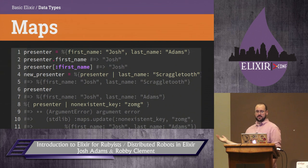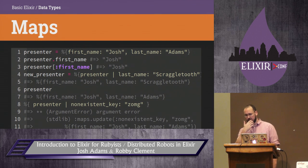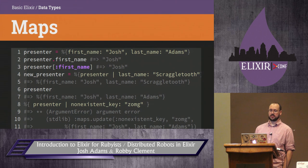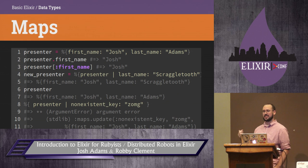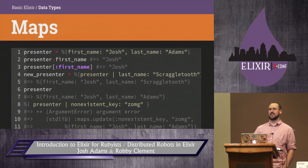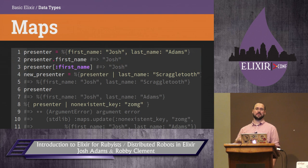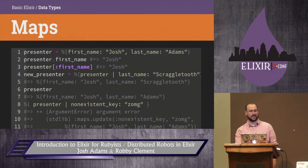Maps are like hashes for the most part. They're very new in Erlang — they landed in R17. As of this writing, they are actually still slow for large numbers of keys. At Erlang Factory they said that was going to be fixed in 17.1, but then there were crickets, so I'm assuming that's going to be fixed soon.